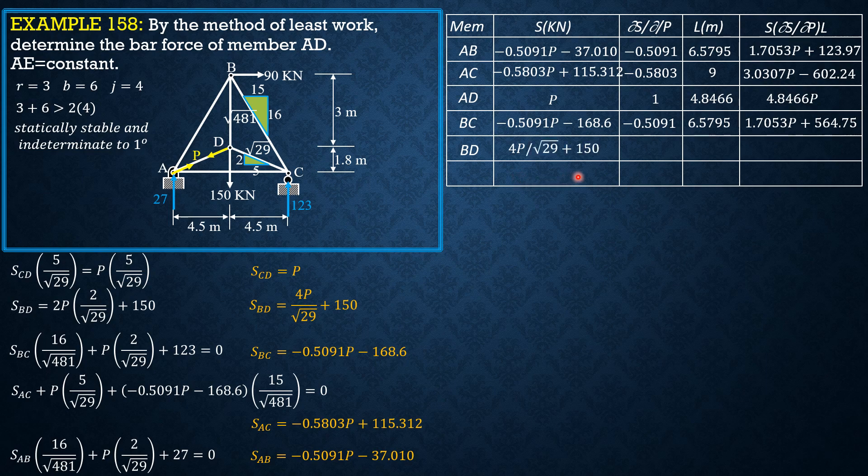Then BD, which is 4P over square root of 29 plus 150. The partial derivative 4 over square root of 29. The length is 4.5795, then the product.